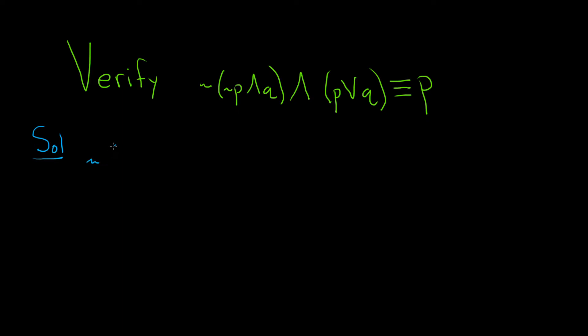So we have the negation of not p and q and p or q. So a good first step is to use De Morgan's law here on this first piece.